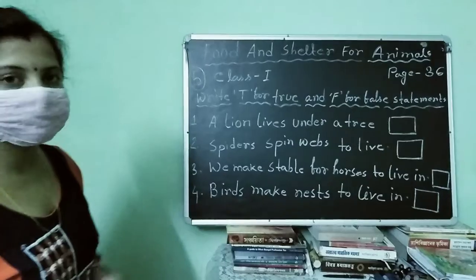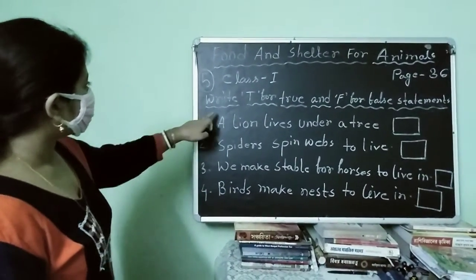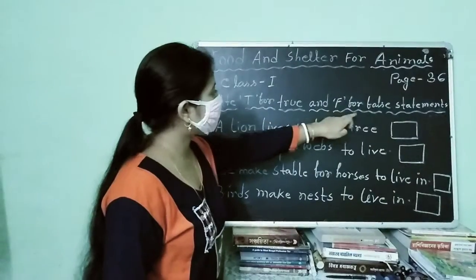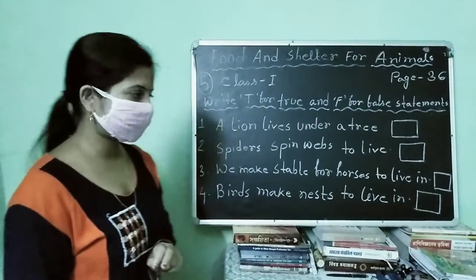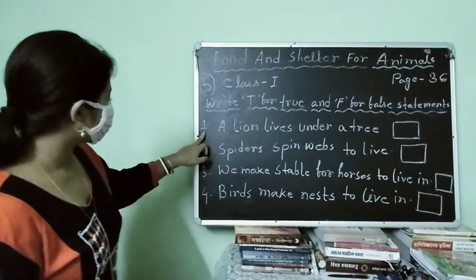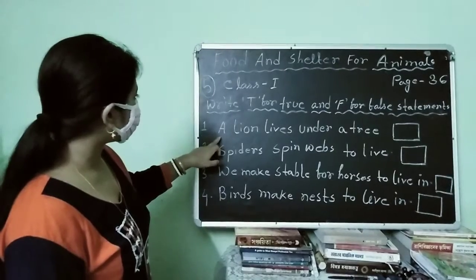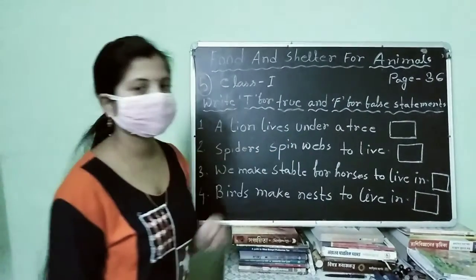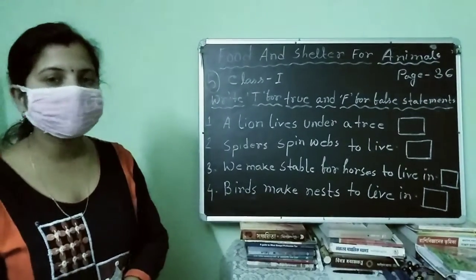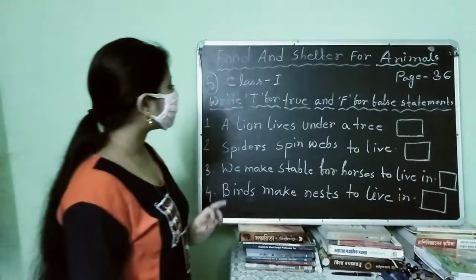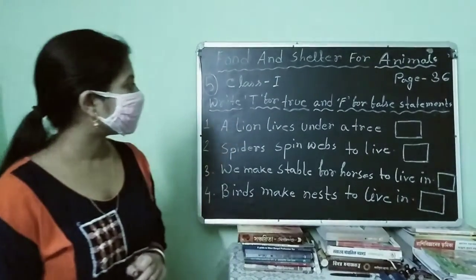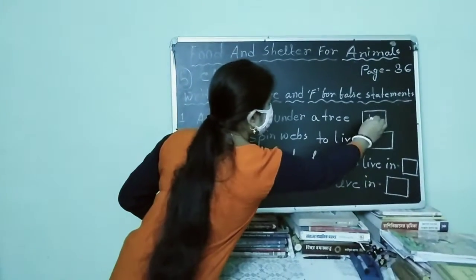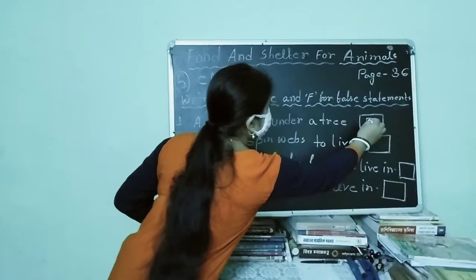Let's solve this exercise. Write T for true and F for false statement. Let's start. This is the first one: a lion lives under a tree. This statement is false because a lion lives in a den. So we will put F in this box.